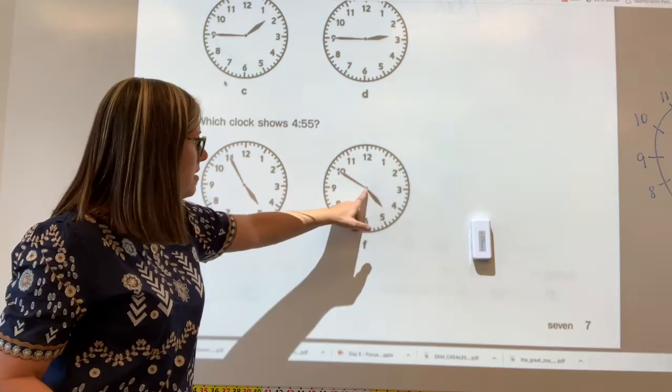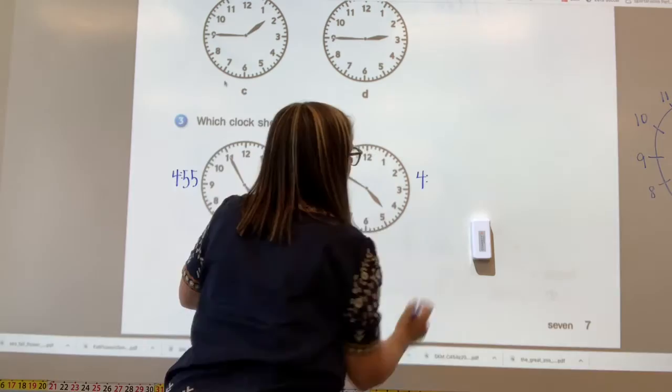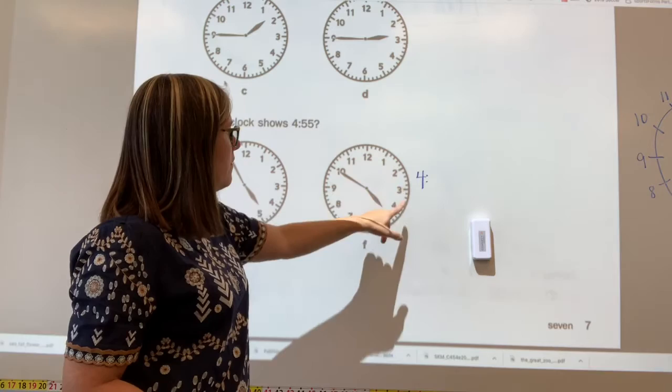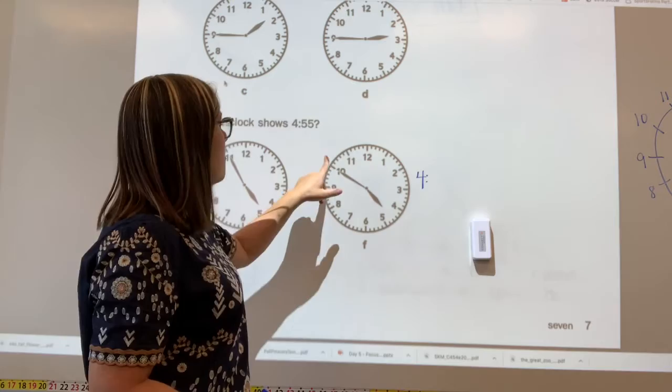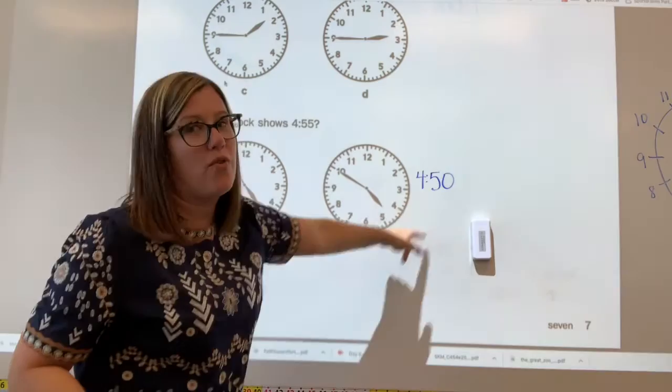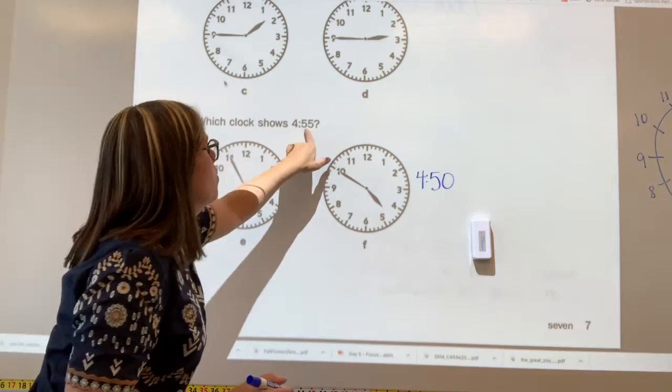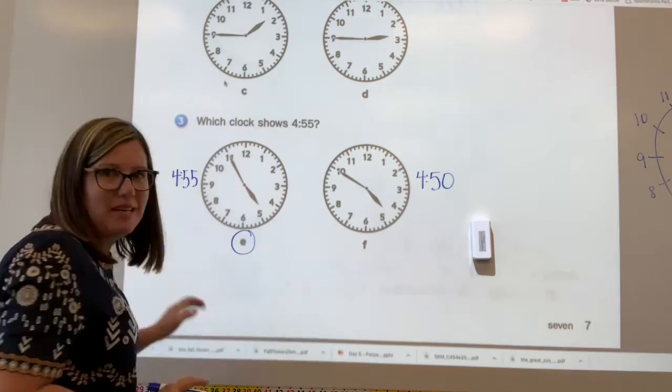So my hour hand is between the four and the five again. So that means it's four. It's not quite at the five. And then let's count our minutes. So 5, 10, 15, 20, 25, 30, 35, 40, 45, 50. So I think this clock shows 450, but this clock shows 455. So what will I circle for which clock shows 455? You're right. I will circle E.